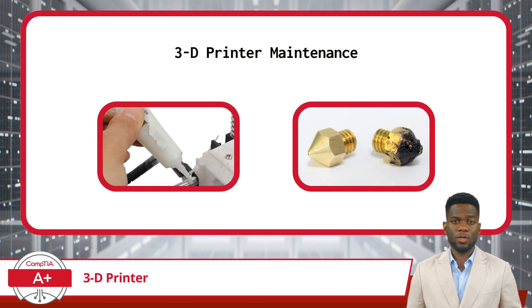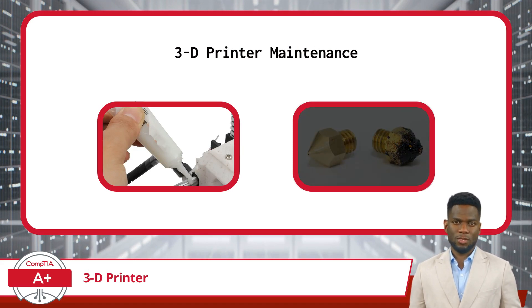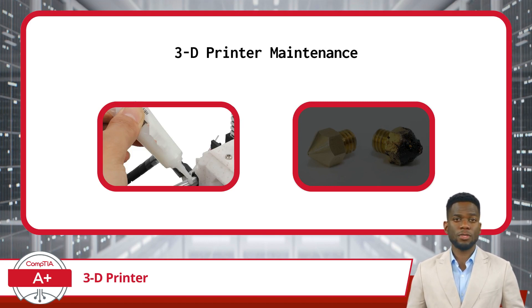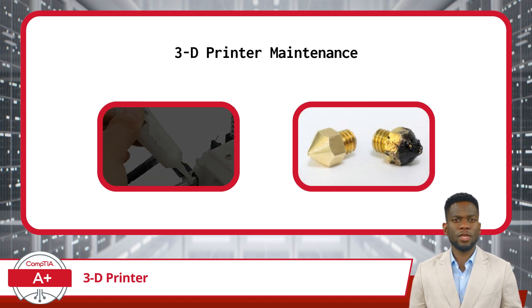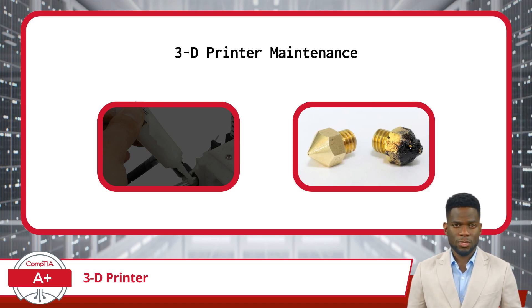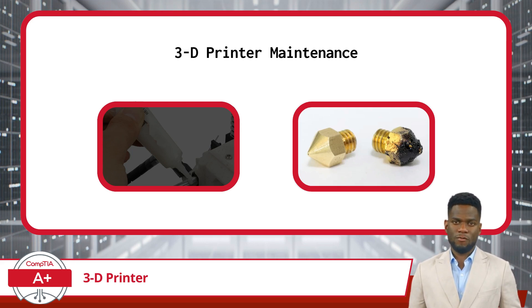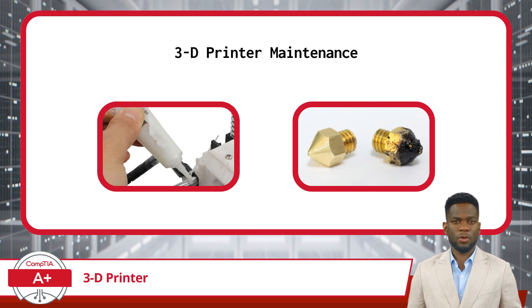Maintaining a 3D printer is essential for optimal performance and longevity, involving several key tasks. One such task is greasing moving parts like rails, rods, and gears to reduce friction and prevent mechanical failures. Using grease ensures smooth movement without compromising print quality. Additionally, regular cleaning of the extruder is crucial to prevent clogs and contamination, which can affect filament flow and print quality. This involves heating the extruder to the recommended temperature and carefully removing any residual filament or debris. Periodically disassembling the extruder for a thorough cleaning can further maintain its functionality. By regularly performing these maintenance tasks, 3D printer owners can prolong their machine's lifespan and achieve consistent, high-quality prints.